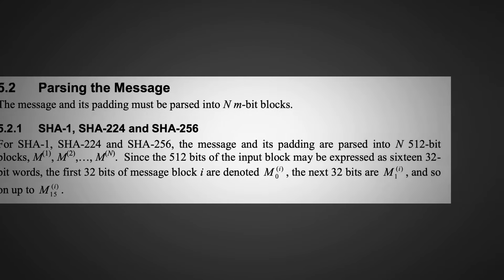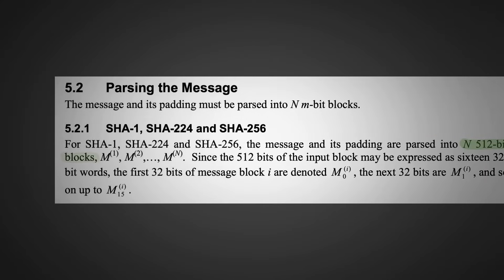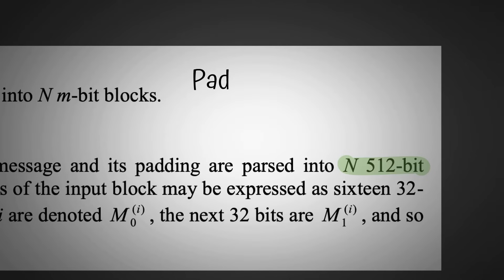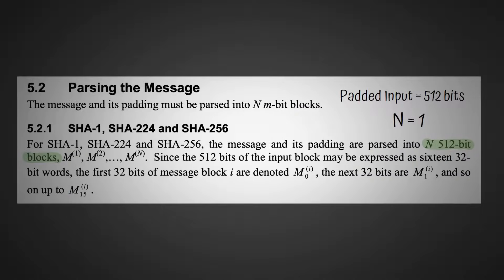The next thing we do is split our padded input into 512-bit blocks. But because our padded input is only 512 bits, then we only have one block. In our case, this capital N here is just equal to 1.